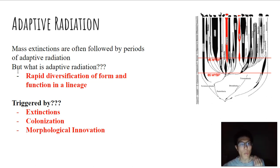So what exactly is adaptive radiation? As I mentioned, adaptive radiation is really nothing more than rapid diversification of form and function within a lineage of organisms. And in terms of adaptive radiation, there are three things that trigger it. The first is extinction, the second one is colonization, and the third one is some kind of a morphological innovation.